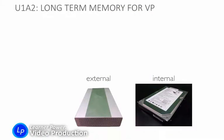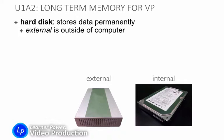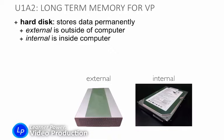Let's talk about drives first. A hard disk or a hard drive is a way to permanently store data that you want to keep for more than just the one time you're using the computer. Those come in two different kinds. An external drive is outside of the computer — it's a box sitting next to the computer that you can see — whereas an internal hard drive is the exact same hard drive but hidden inside the computer case, so you don't see the drive.